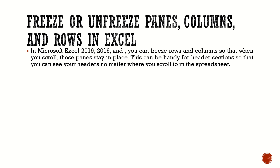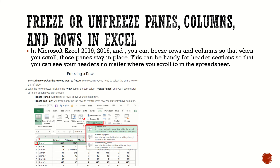There are two types of freeze panes: one is row wise freeze panes, and second is column wise freeze panes. For freezing a row, select a row below the row you want to freeze. To select a row, you need to select the entire row on the left side. With the row selected, click on the View menu tab at the top and select Freeze Panes.